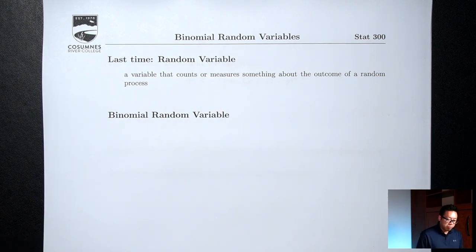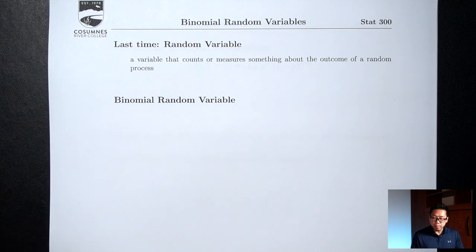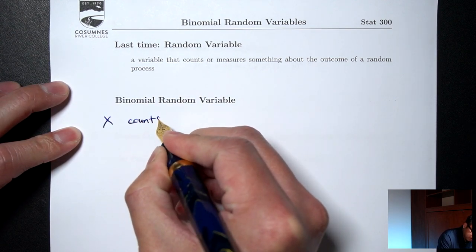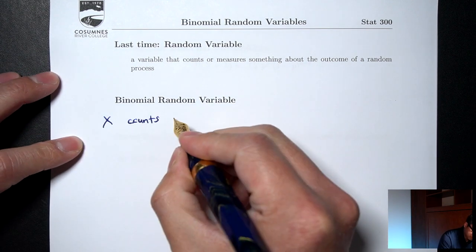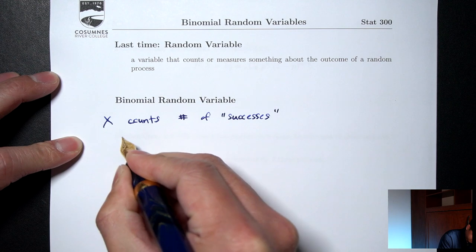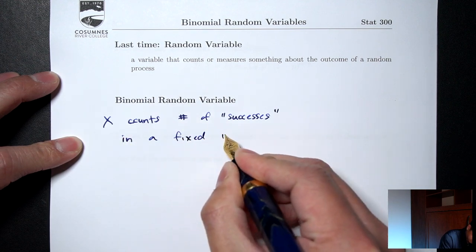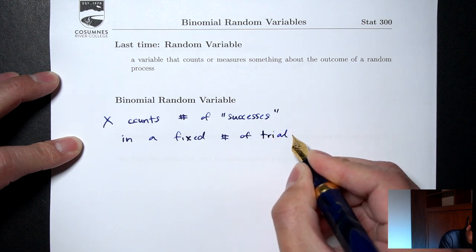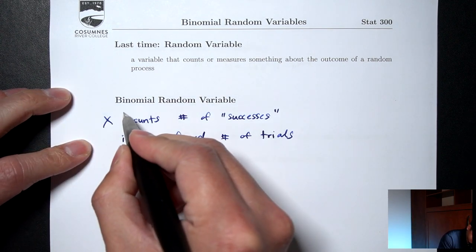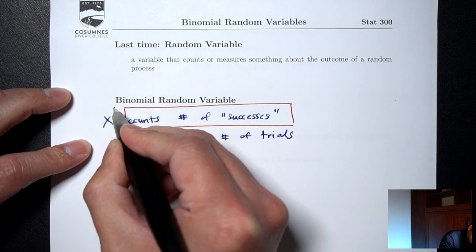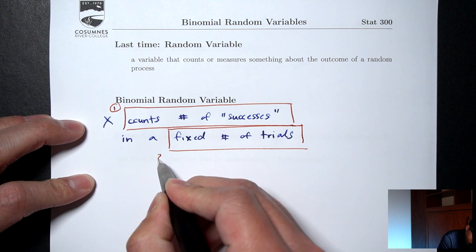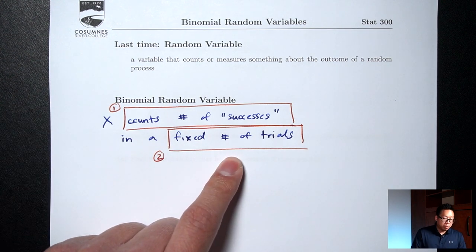Today we're going to talk about a very special type of random variable called a binomial random variable. It's special in the sense that it counts something very specific: binomial random variables count the number of successes in a fixed number of trials. The two important things here are what it's counting — the number of successes — and that there is a fixed number of trials, meaning whatever random process we're talking about, we're doing it a fixed number of times.